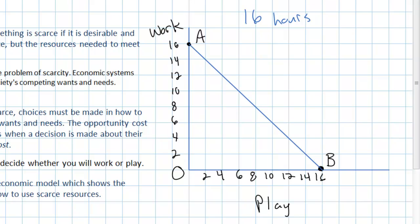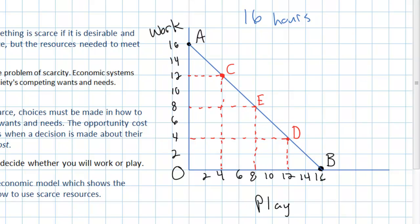Let's look at some other possibilities along this PPC. You could spend 12 hours working, leaving 4 hours for play — that would be point C, a long day of work but with 4 hours of play. On the other hand, you could spend 12 hours playing and only 4 hours working, which also lies on the production possibilities curve. Any point along this curve is possible — for example, 8 hours working and 8 hours playing, a healthy balance, which we can call point E.